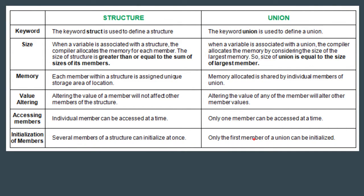Now let's look at the differences between structure and union. With respect to keyword, the keyword for structure is struct and for union is union. The size of a structure is greater than or equal to the sum of the sizes of its members — due to structure padding it can be larger. But in case of a union, the size is equal to the size of the largest member inside the union.